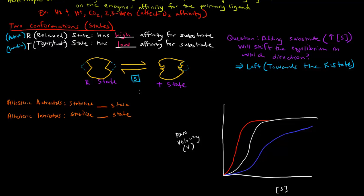That makes sense. If we increase the substrate concentration, it will shift the equilibrium between the R and T states. If there's more substrate, we want the enzyme to be more active and have a high affinity for the substrate. So adding substrate shifts the equilibrium towards the R state, making it more active — because if there's more substrate around, chances are we want that enzyme to catalyze the reaction for that particular substrate.